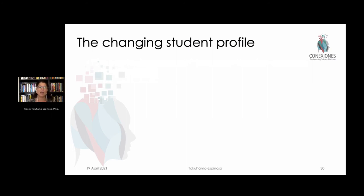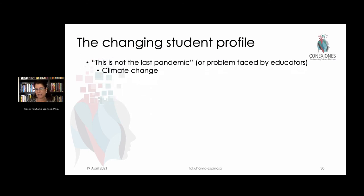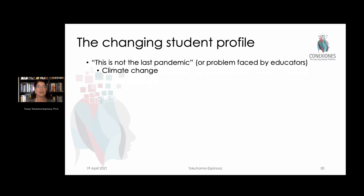Tragically, the United Nations has pointed out to us that this is not the last pandemic—there will be more. Probably the biggest thing facing us will be things like climate change. There are going to be schools closed because of extreme weather conditions, and that's going to happen more frequently than ever.